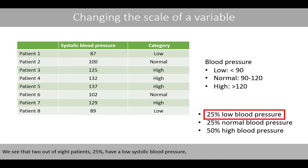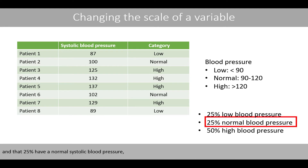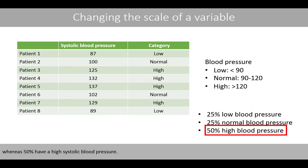We see that 2 out of 8 patients — 25% — have a low systolic blood pressure, and that 25% have a normal systolic blood pressure, whereas 50% have a high systolic blood pressure.